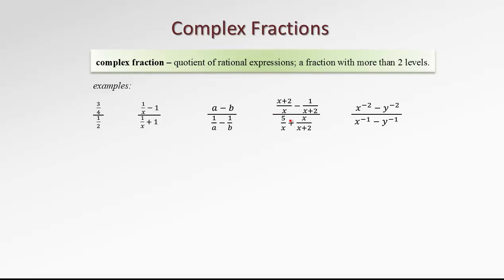A larger rational expression divided by another rational expression — again, four levels. And sometimes a rational expression is hidden under negative exponents. If it's written that way, we'll see only two levels, but it really means four levels, because x to the negative two is actually one over x squared. So we have fractions in the numerator and fractions in the denominator.